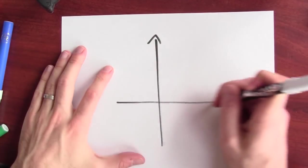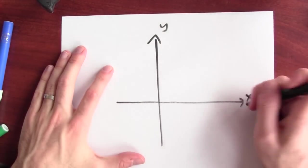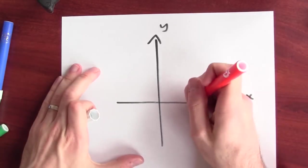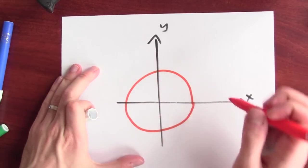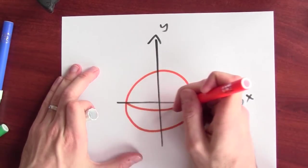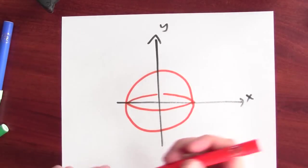Here's the plane. This is the y-axis and the x-axis. And I've got my circle in the xy plane.